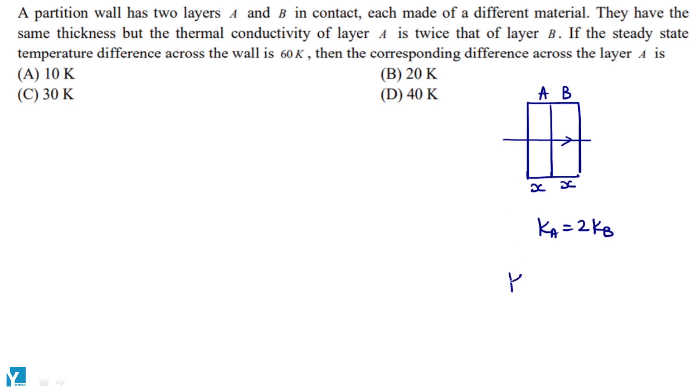Series combinations have been connected, so K effective formula is 2 K A K B upon K A plus K B. If I put this value, it will be 2 K A into K B by 2.